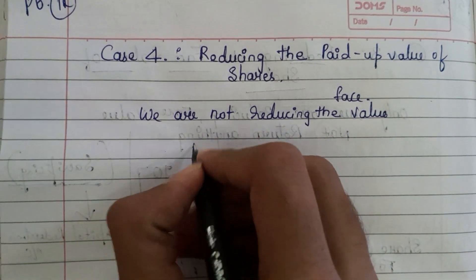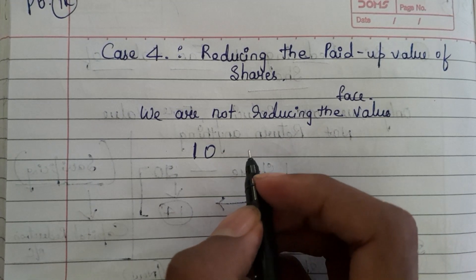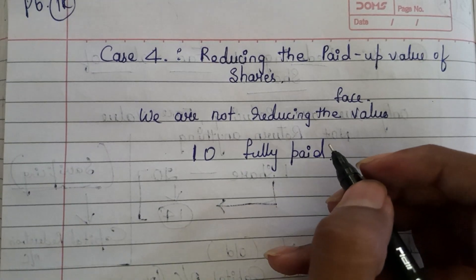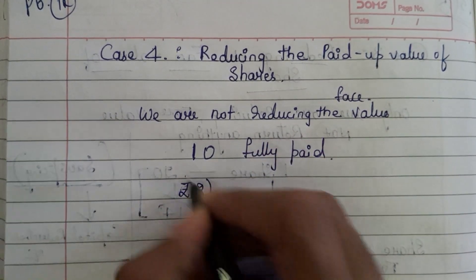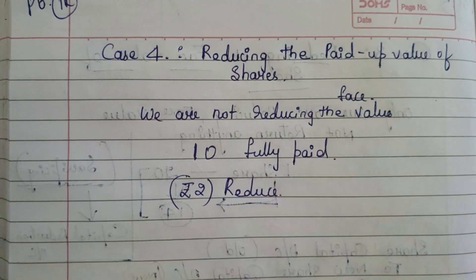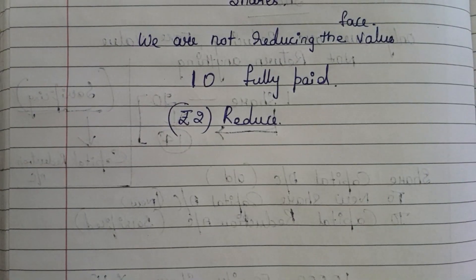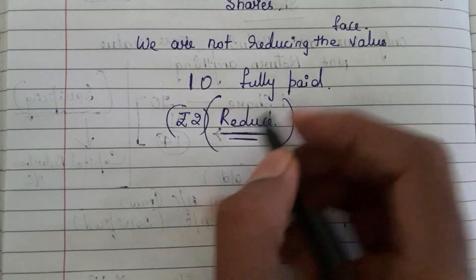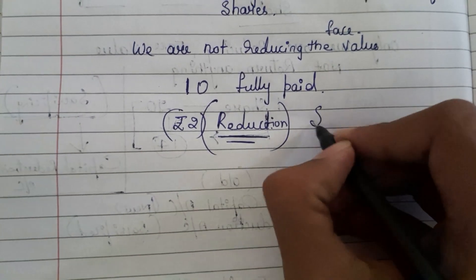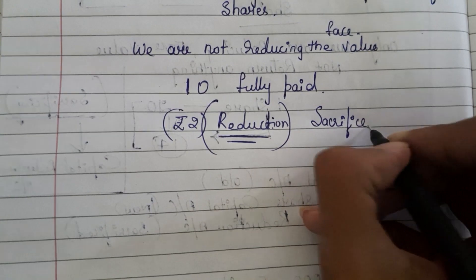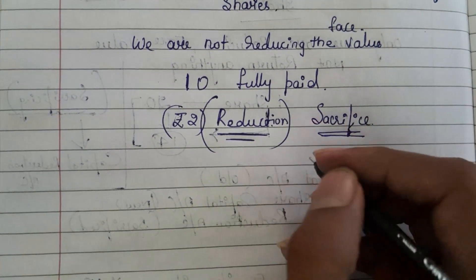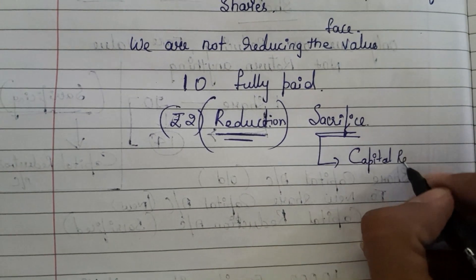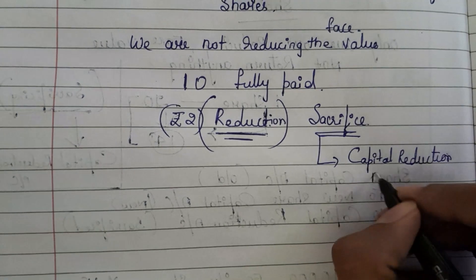So what happens? For example, ten rupees is the value of each share and it is fully paid. Ten rupees is fully collected. Now when we try to reduce rupees two, the reduction amount — whatever the reduction amount is — that is nothing but the sacrifice made by equity shareholders. All the sacrifices we should transfer to the capital reduction account.